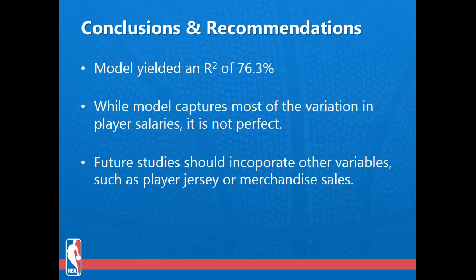Our model gave us an R-squared value of 76.3%. We consider this a success, given the multitude of factors considered when players and teams sign contracts. However, we recognize that improvements could be made. An improved model could include off-the-court statistics such as jersey and merchandise sales, which are known to influence salary.